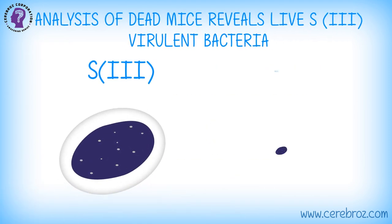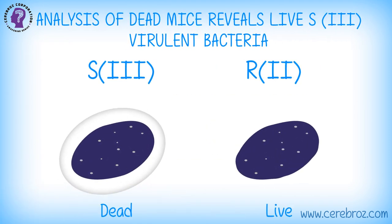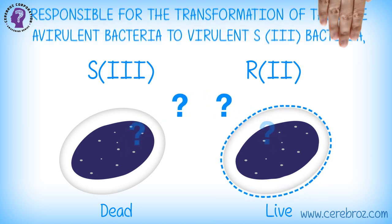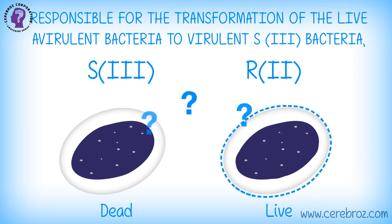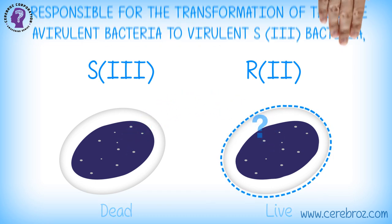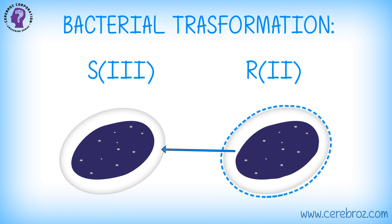Analysis of dead mice reveals live S3 virulent bacteria, suggesting something from the heat-killed S3 had transformed the live avirulent R2 bacteria, responsible for the transformation of the live avirulent bacteria to virulent S3 bacteria, causing death of mice. This is called bacterial transformation.